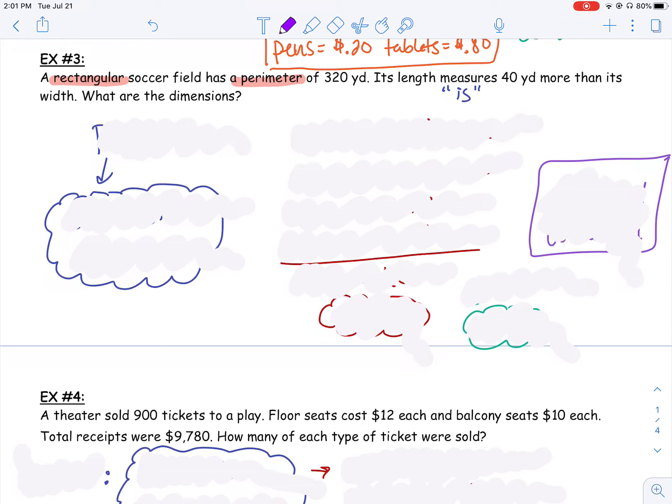So what are we trying to find here? Well, we're trying to find the length and the width. We need to make sure that we label those with different variables. You could use x and y, but then you have to remember which one you called the width and which one you called the length. So be careful with that. I'm going to go ahead and use w for width and l for length. That way I don't get confused.